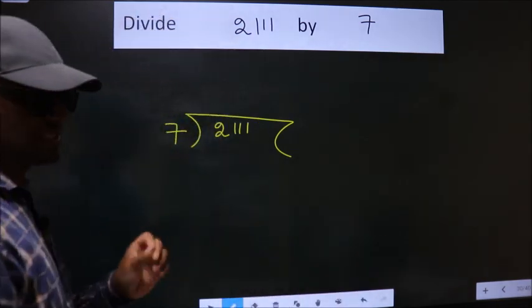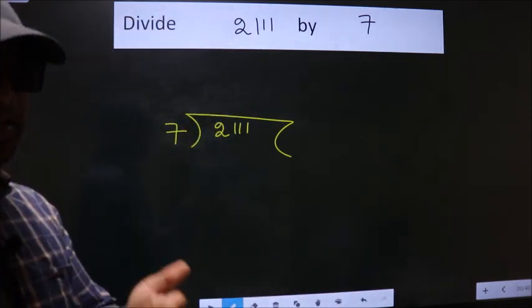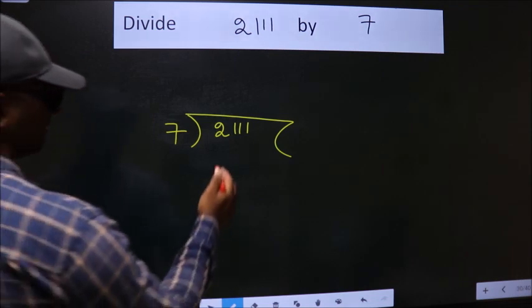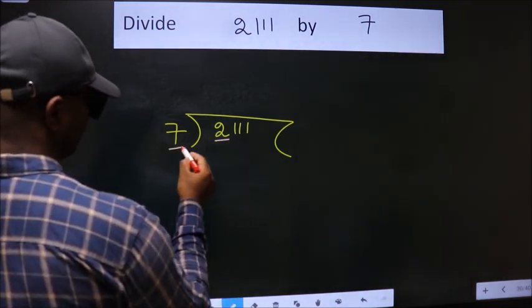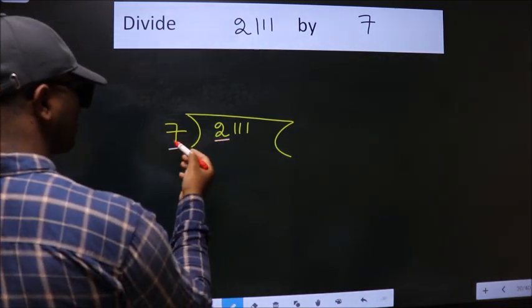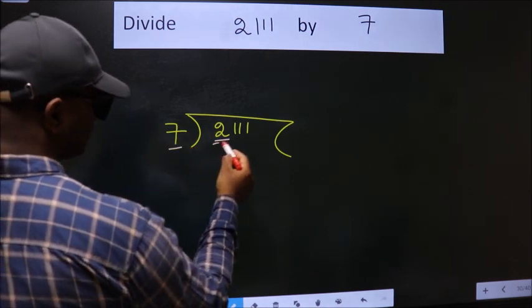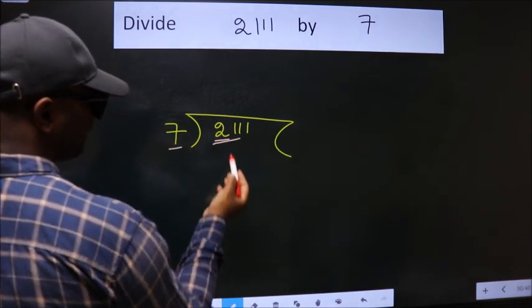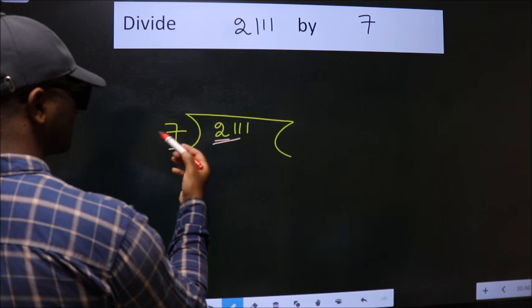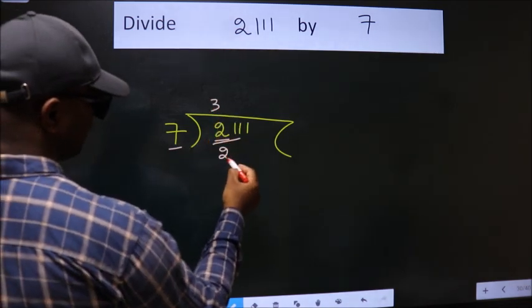This is your step 1. Next, here we have 2, here 7. 2 is smaller than 7, so we should take 2 numbers: 21. When do we get 21 in 7 table? 7 threes, 21.